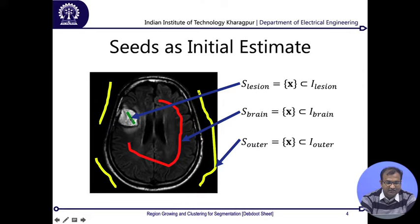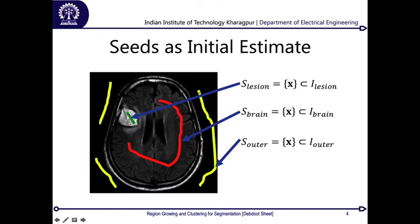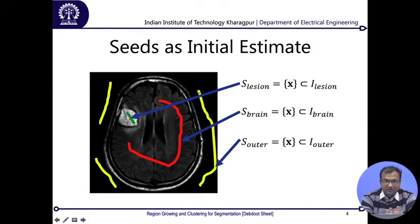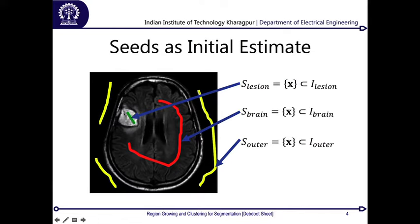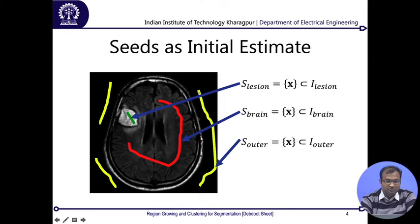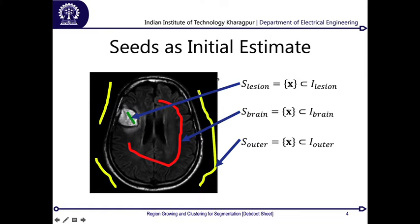The idea for region growing is that these seeds propagate. Everything in the neighborhood looks at its closest neighbor and tries to expand. Initially from small independent pixels, it grows into a group of pixels or a cluster and eventually converges. At convergence, the whole lesion region, brain region, and outer region are distinctly labeled. You can achieve this convergence by doing a raster scan — taking pixels column-wise, shifting rows, and assigning the label of the nearest neighbor in a serial search through all pixels.